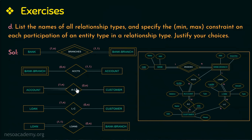The next relationship type is account-customer (AC), relating account and customer. All accounts have one or more customers, so total participation represented as 1, and one account can have at most n customers considering joint accounts. Conversely, not all customers need have an account, so partial participation, and one customer can have at most n accounts.